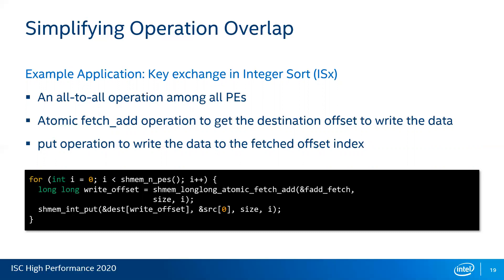The integer sort benchmark performs a key exchange which is an all-to-all operation. It employs a fetch-add operation first to get the remote destination offset index — this is an atomic operation to make sure all PEs are not writing to the same place — and then a put operation which writes the data to that index. This code snippet shows the key exchange routine in the default integer sort application, which employs a single loop with one atomic fetch-add operation and then an atomic put.